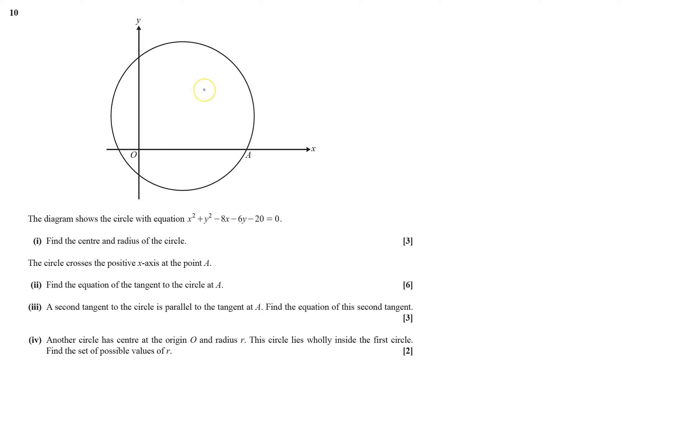I use this diagram with the equation in non-complete square form. To find the center and radius, I'll put it into complete square form. I can rewrite it starting with the x's first: x squared minus 8x plus y squared minus 6y